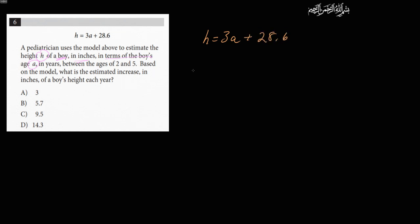So the kid is not growing, how is it going to compare with if the kid is growing properly or not, if he's malnourished, or somebody's not getting food at home, or something, right? So he estimates what the height of the boy should be by using this equation, h = 3a + 28.6. So he estimates the height of the child between ages 2 and 5. Why between ages 2 and 5? Because this equation is not accurate outside of this range. Based on the model, what is the estimated increase in inches of the boy's height each year? So based on this model, how much does the boy grow every year?